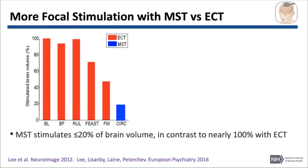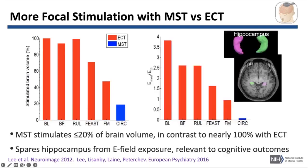Using realistic head modeling, MST in the blue bar is stimulating only about 20% or less of the entire brain volume, whereas the five different types of ECT in the red bars stimulate much larger amounts — with conventional electrode placements, it's almost 100%. Drawing a region of interest around the hippocampus, MST in blue is really not stimulating the hippocampus above the threshold for neuronal depolarization, so it spares these non-targets from electric field exposure, which may be relevant to cognitive side effects.